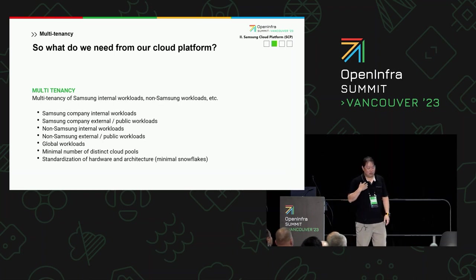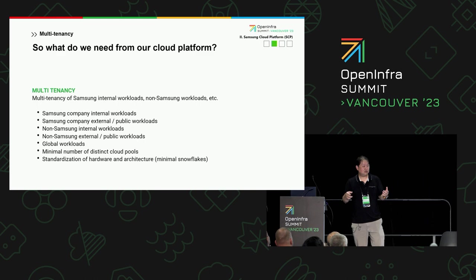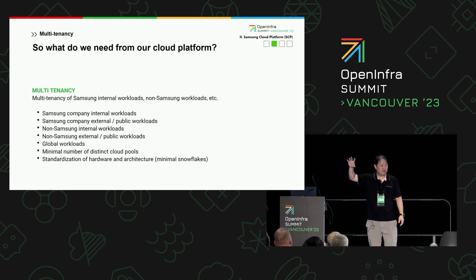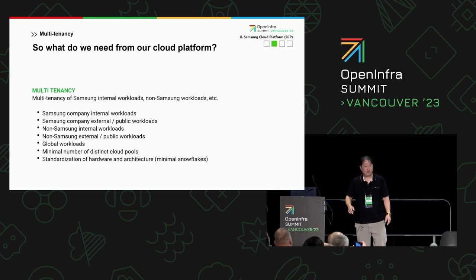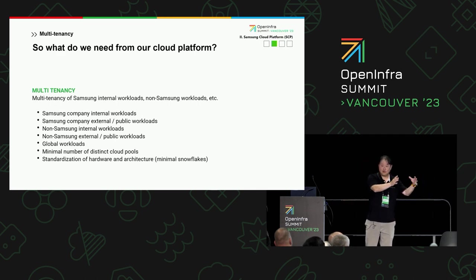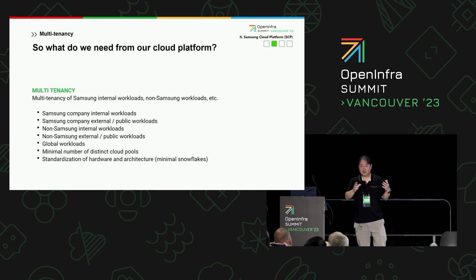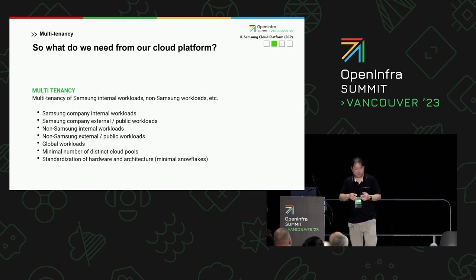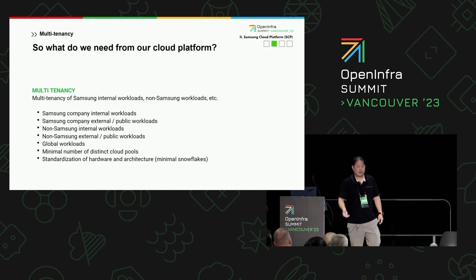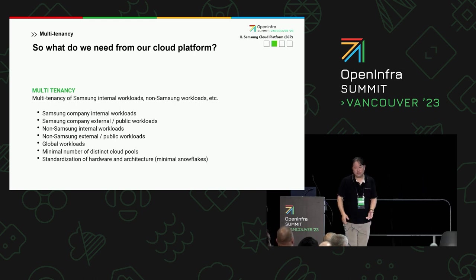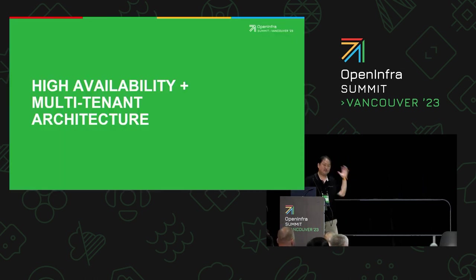From our perspective as the ones running the cloud, we need multi-tenancy — we have to be efficient because even though customers are less price-sensitive, profit is still revenue minus cost. How do we get Samsung's internal workloads to work with external-facing workloads? Can we put them on the same hardware even though they're on different network topologies? Can we put non-Samsung business on the same servers as Samsung business while keeping things secure? How do we be more global, minimize distinct cloud pools, standardize hardware, and minimize any snowflake technology? We've taken all this into consideration trying to build an architecture that we think might work.